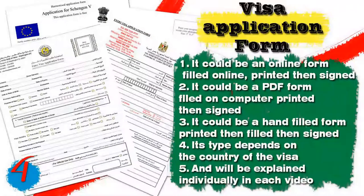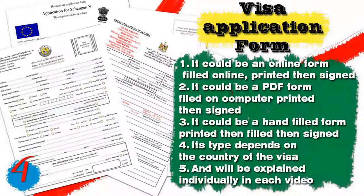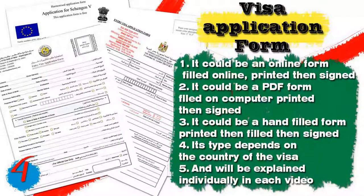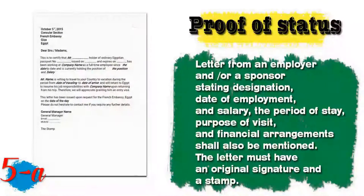Number three: personal pictures — you will need two pictures not older than six months, clearly showing the full face with white background and neutral expression. No head or face covering accepted except for religious reasons. Number four: visa application form — it could be an online form filled online, printed then signed; a PDF form filled on computer, printed then signed; or a hand-filled form printed then signed. Its type depends on the country of the visa.